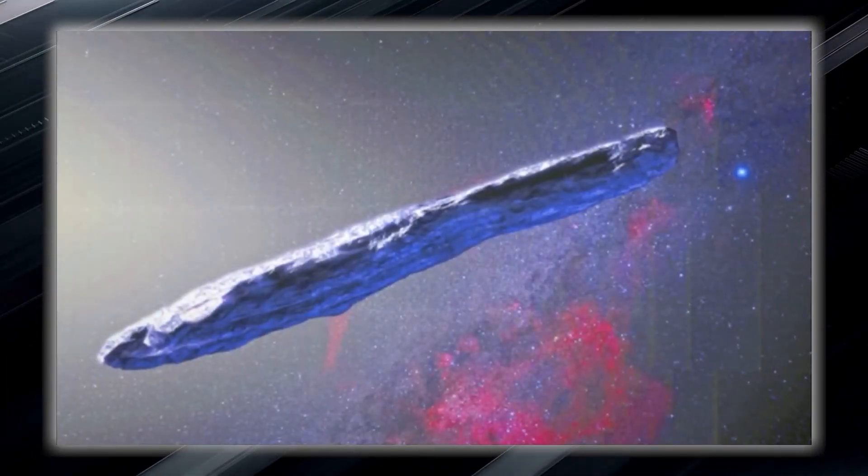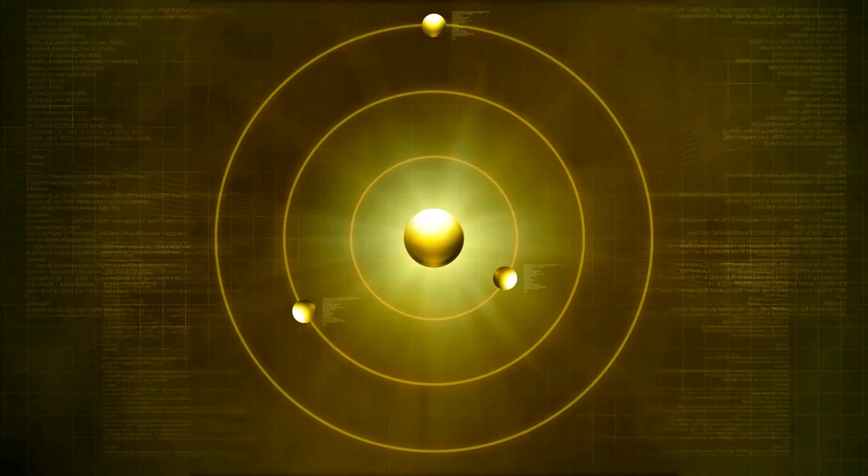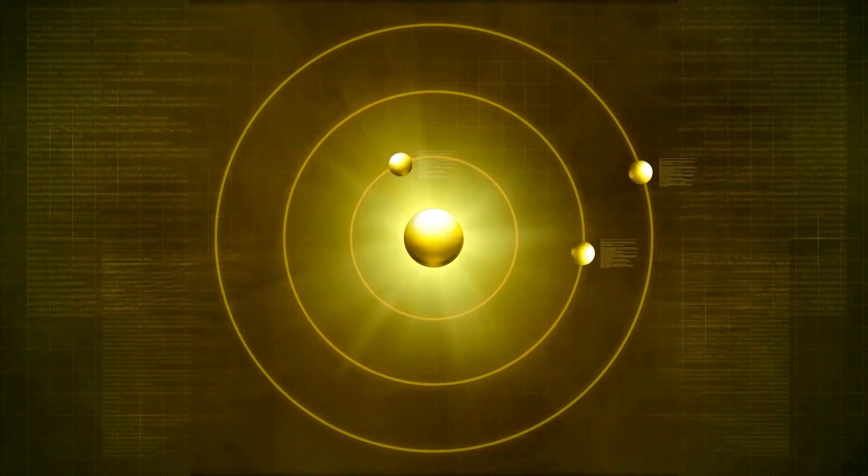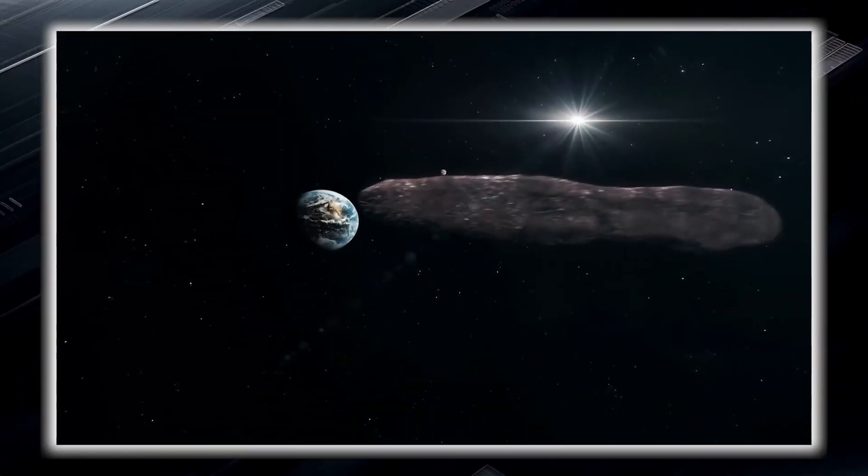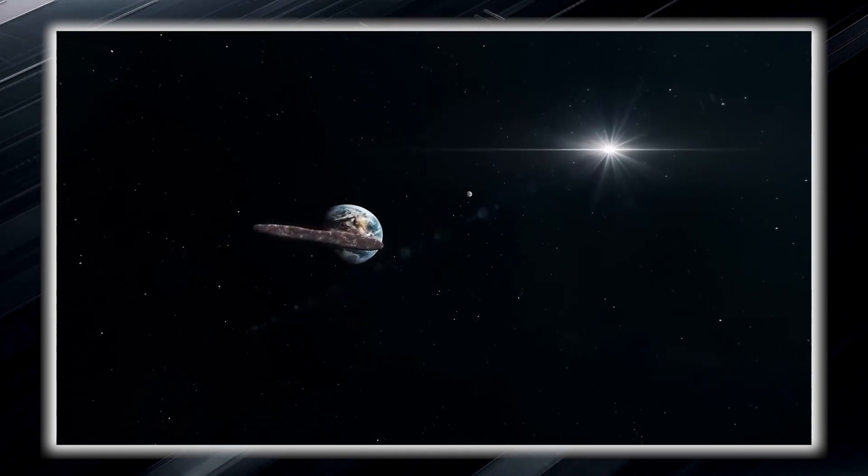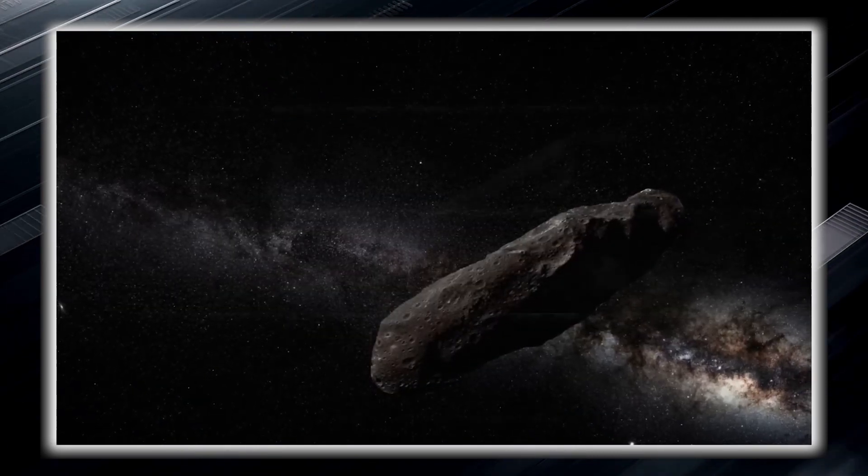Oumuamua is thought to have made forays into a completely new star system when it entered our solar neighborhood at a speed comparable to that of other nearby stars. Although the possibility that it has been wandering the galaxy for billions of years, observing a sky where stars appear to be isolated and self-contained, shining alone, is also not ruled out.